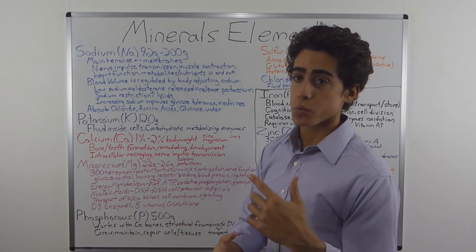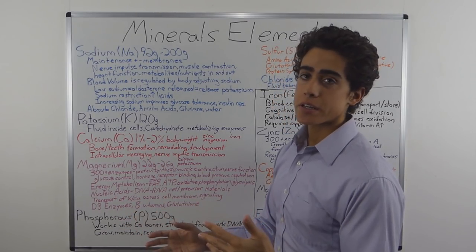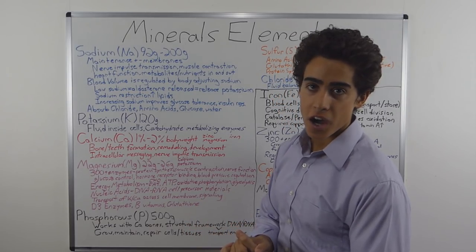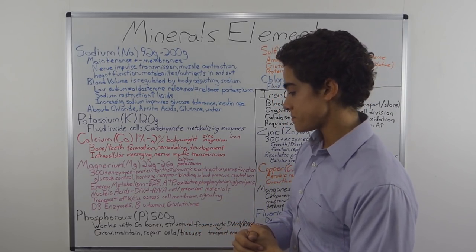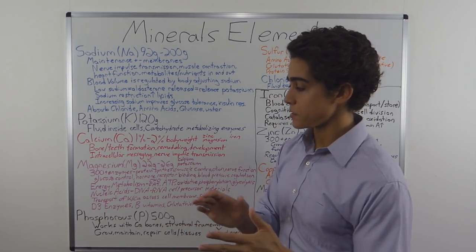It is needed in every single vitamin D3 metabolizing enzyme. So all of the enzymes associated with absorbing vitamin D3 require magnesium. It's also needed to absorb certain B vitamins and is involved in glutathione, the chief antioxidant production.